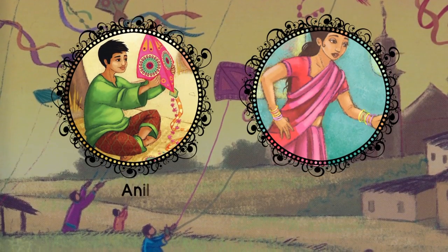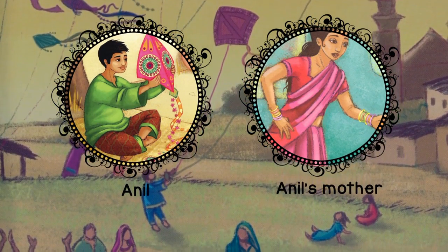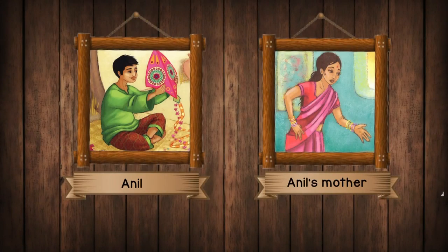Characters and characteristics. There are two very important characters in this story — do you know who they are? This is Anil. This is Anil's mother. Can you describe their personalities? What kind of people do you think they are? Remember, we use adjectives to describe a person, and provide a reason based on the story. For example: I think Anil is a clever boy because he can mend kites for his friends.